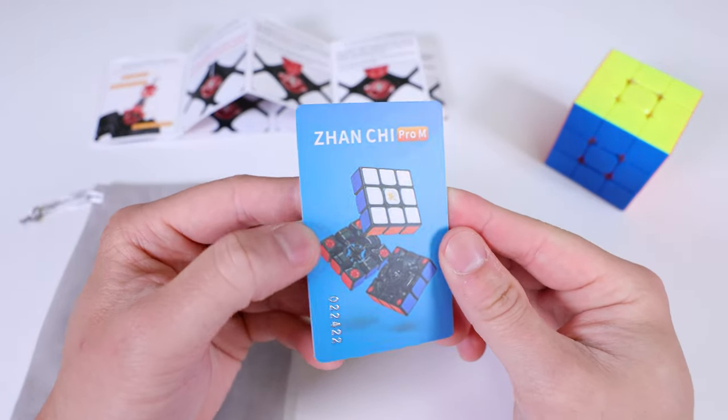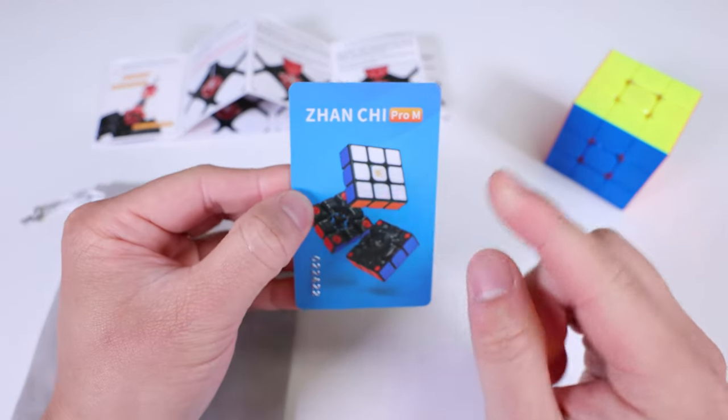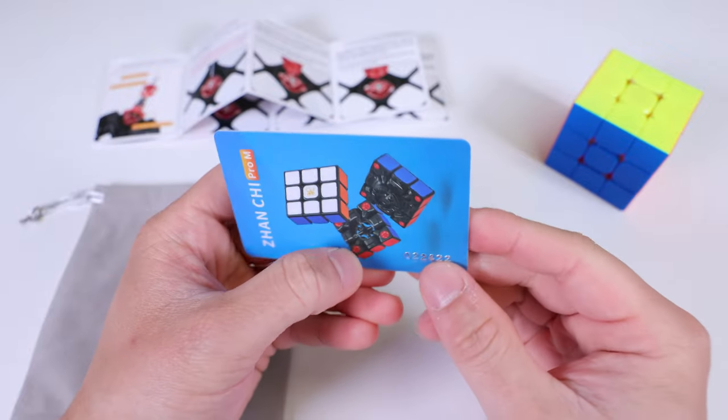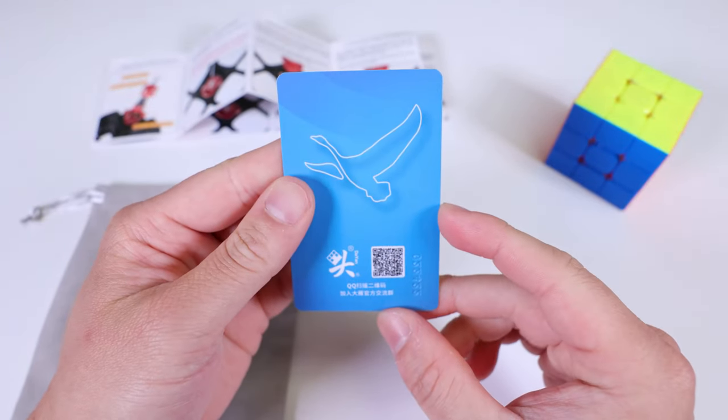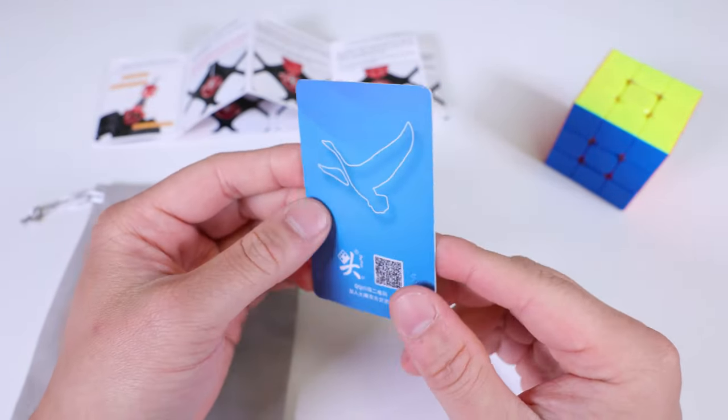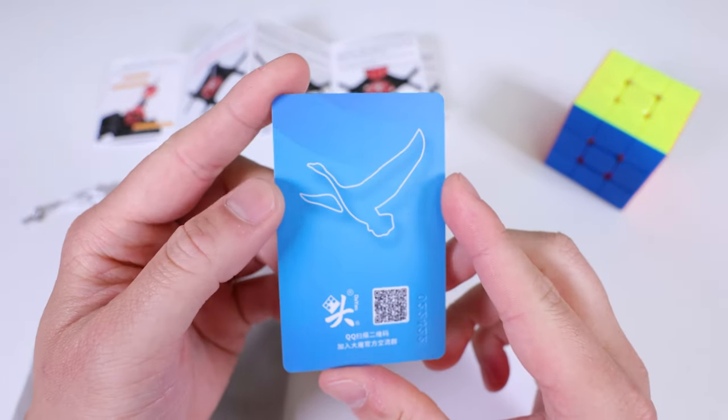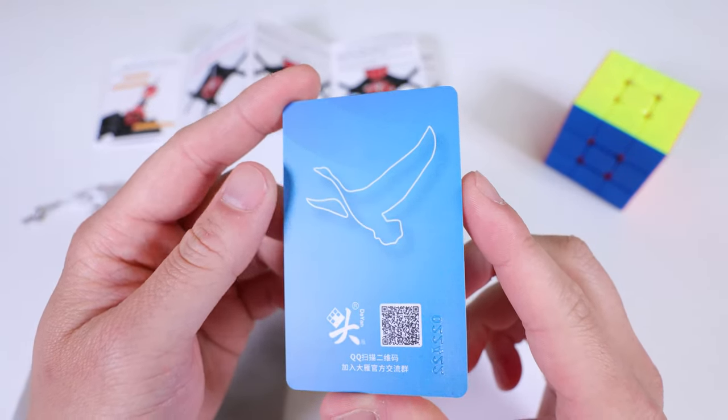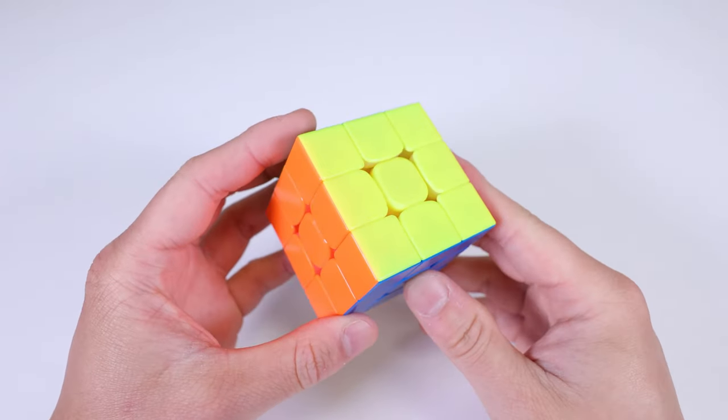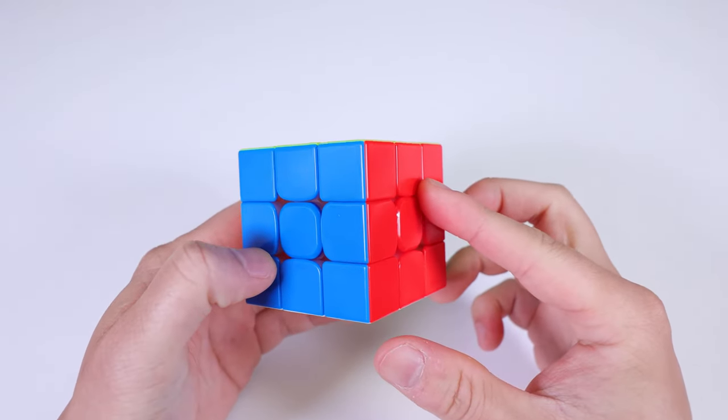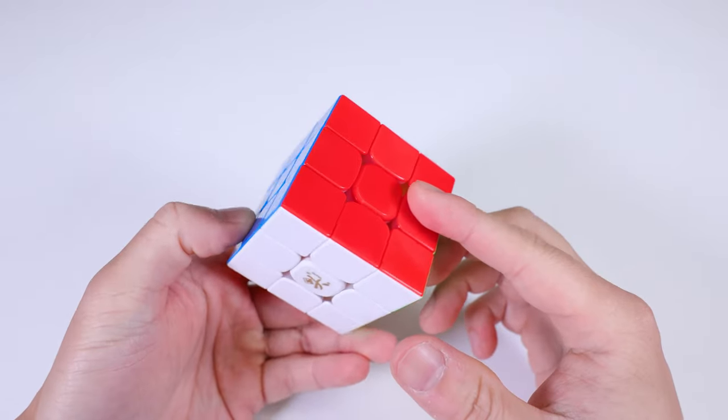And then there's this nice card. It says Zanchi Pro M. It has a really high-quality feature. I don't know what this number is for, but it's pretty cool. I'm very excited, and the lone goose is back. For sure, this is very exciting. So this is the cube itself. It weighs about 78 grams and is 56 millimeters, so it's on the lighter end of 3x3 speed cubes.